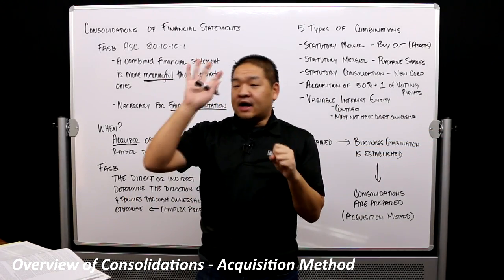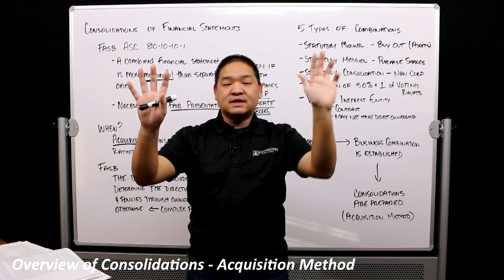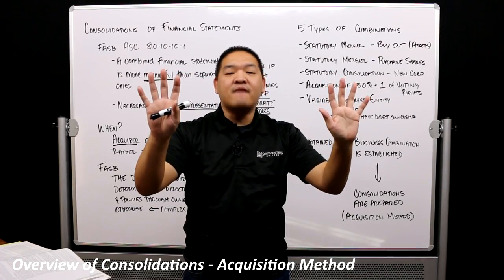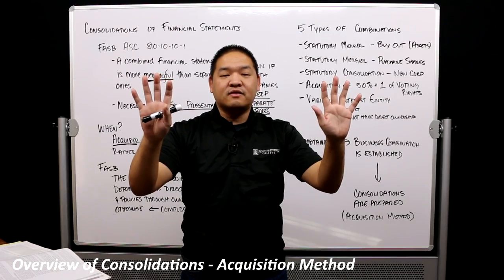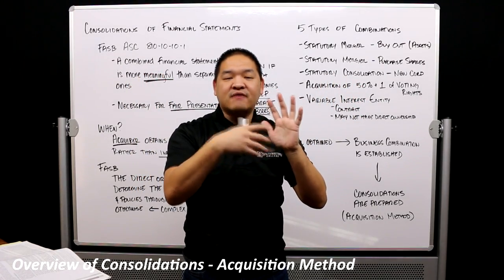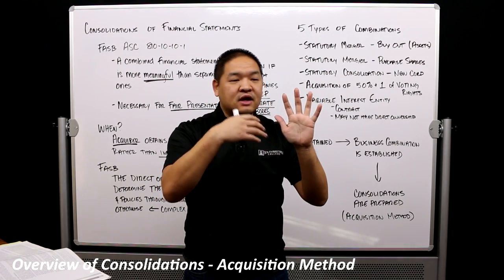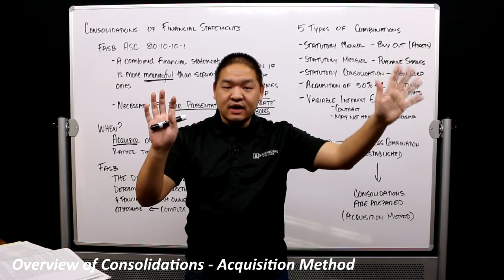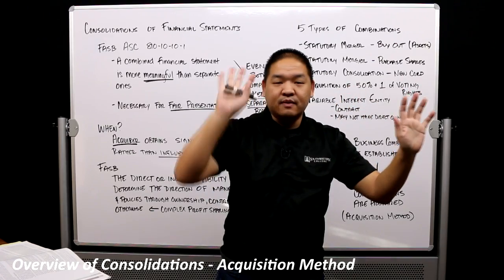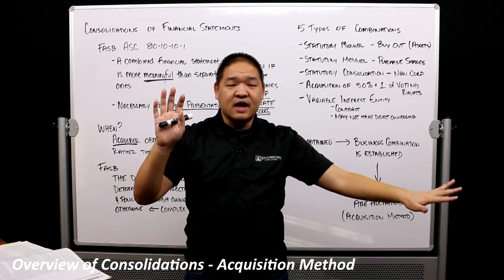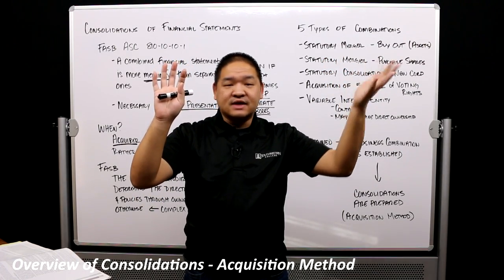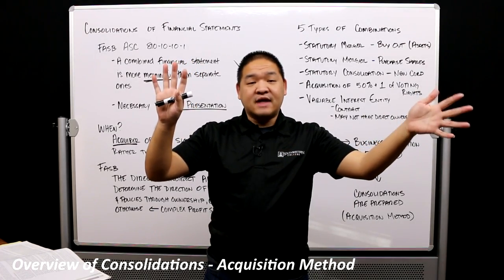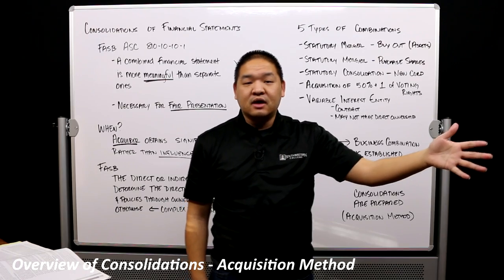In a statutory merger with a buyout of assets: Company A wants to acquire all the assets of Company B. They go to Company B and say, we want to buy all of your assets — we don't want your corporation, just everything you have. The brand name doesn't mean anything to us; we just want the assets. So Company A buys all of the assets, Company B receives cash, and then dissolves because it has nothing left. That's a statutory merger where Company A buys out all the assets and Company B dissolves.